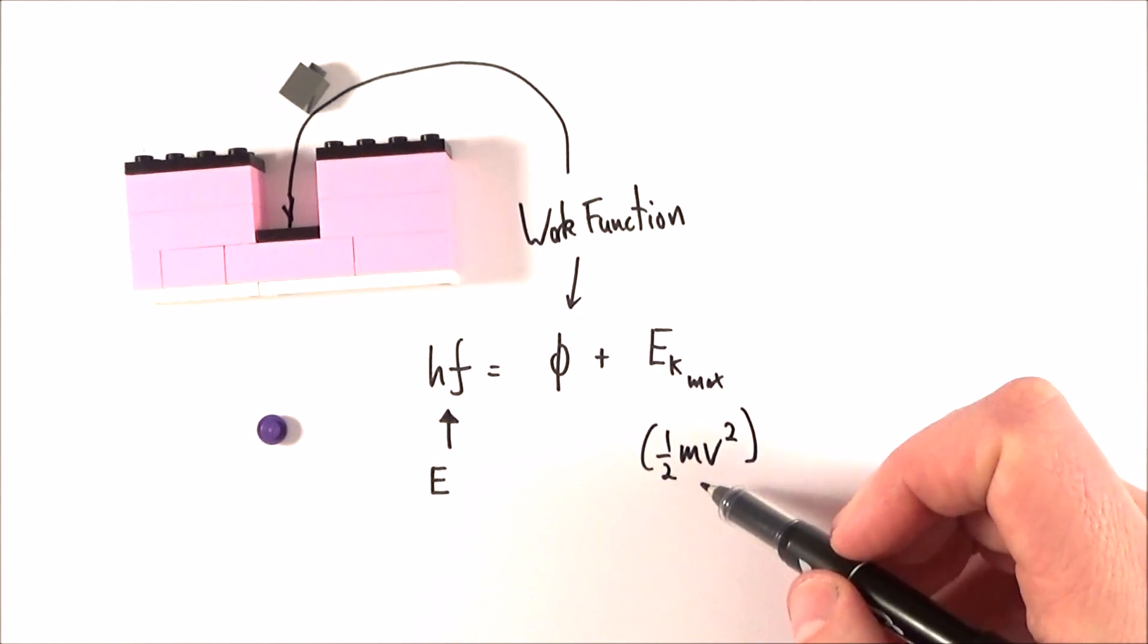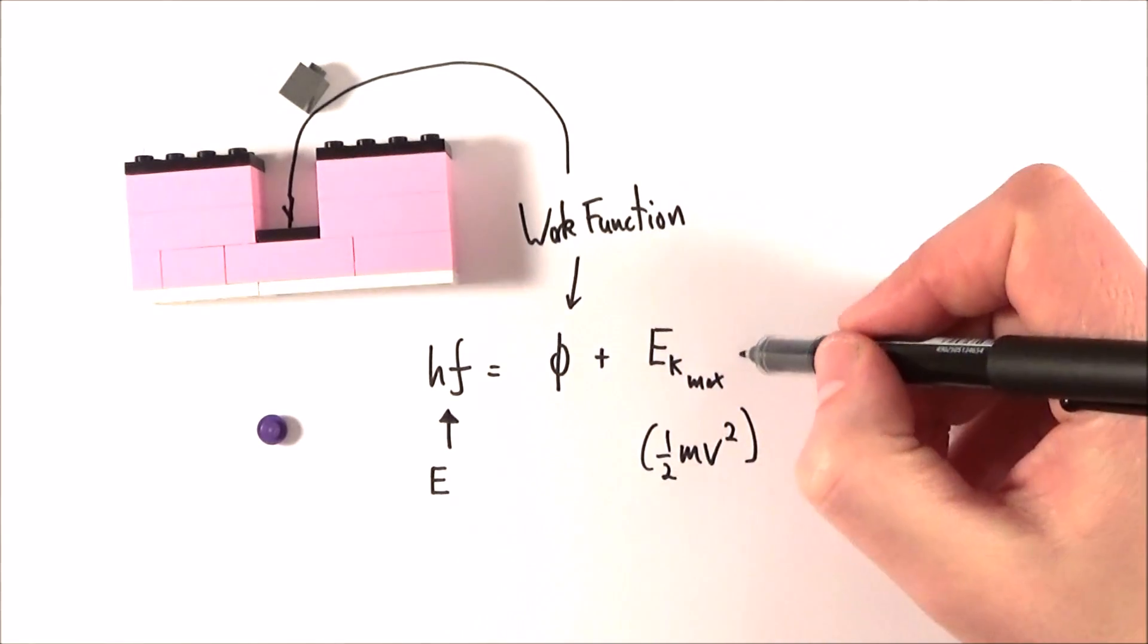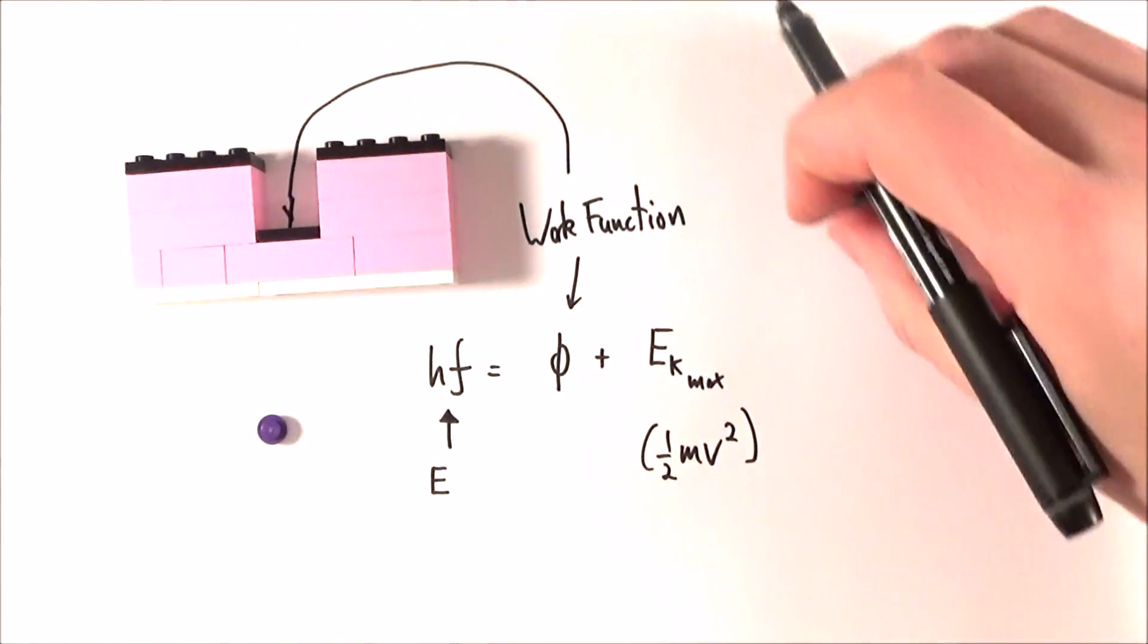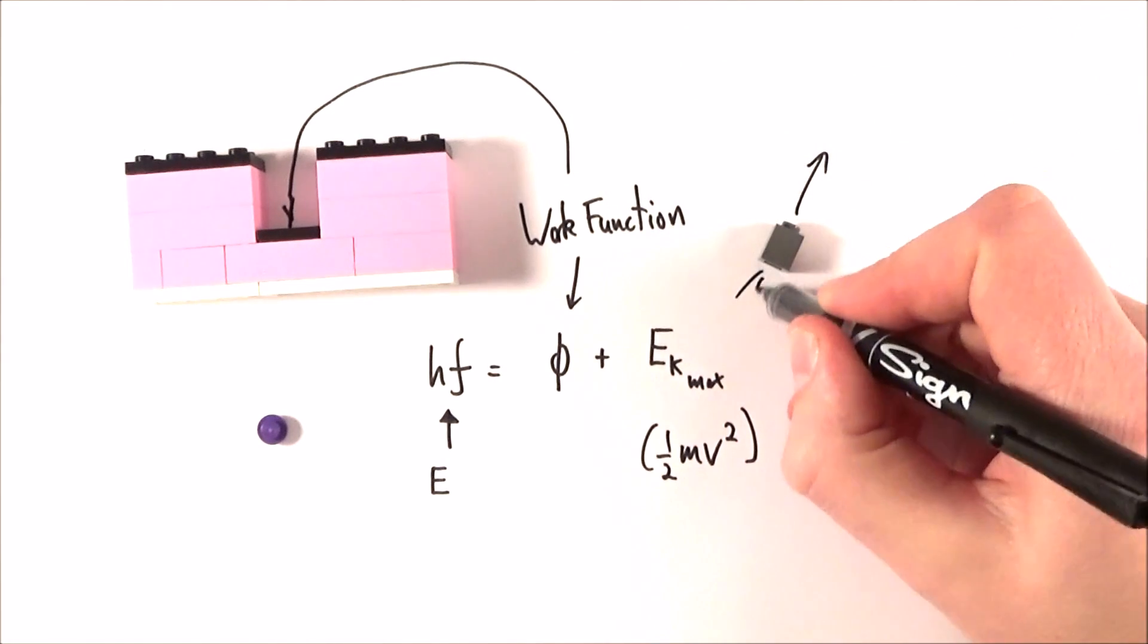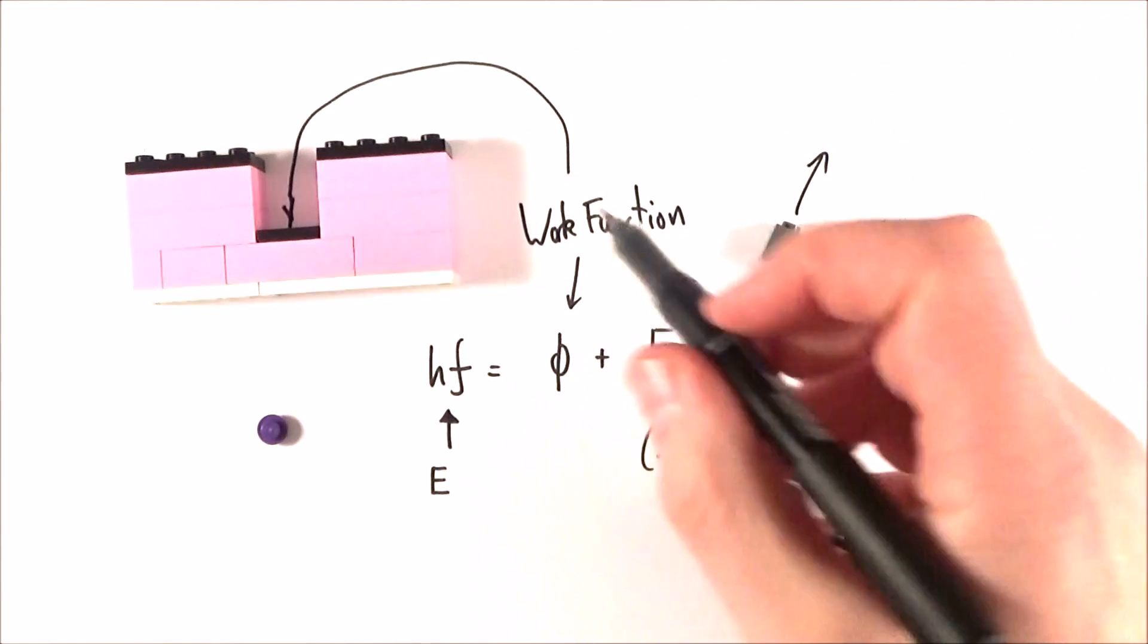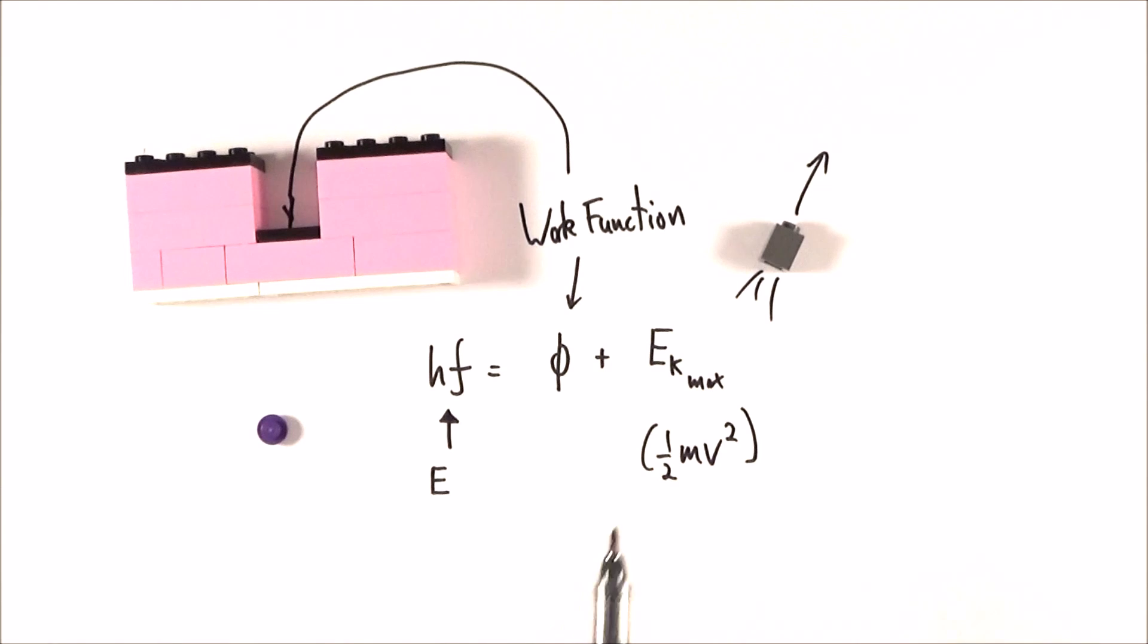And you can often find the mass of the electron in your data book. So this is how much energy the electron goes flying off with after it's been liberated from that atom. And this equation here is known as Einstein's equation.